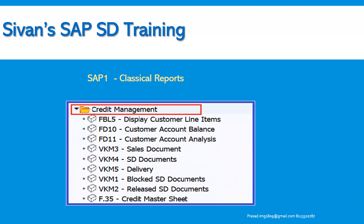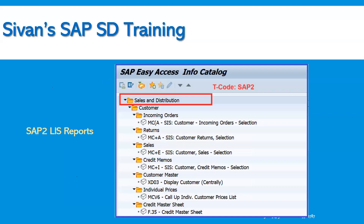For credit management, we can see FBL5N display customer line items, VKM3 and VKM4 to release the credit block — which we have already seen — and VKM5, also seen in credit management. VKM1 blocked SD documents, VKM2 released SD documents, and F.35, which is one of the important transaction codes in the credit master data report — the credit master sheet can be seen using transaction code F.35. We will see them at a high level in the system.